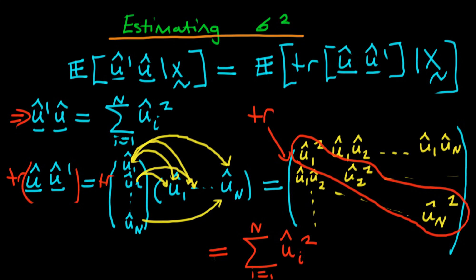So when we take the expectation of this, it's just going to be equal to the expectation of û' times û given x. So the left-hand side and the right-hand side are absolutely identical.